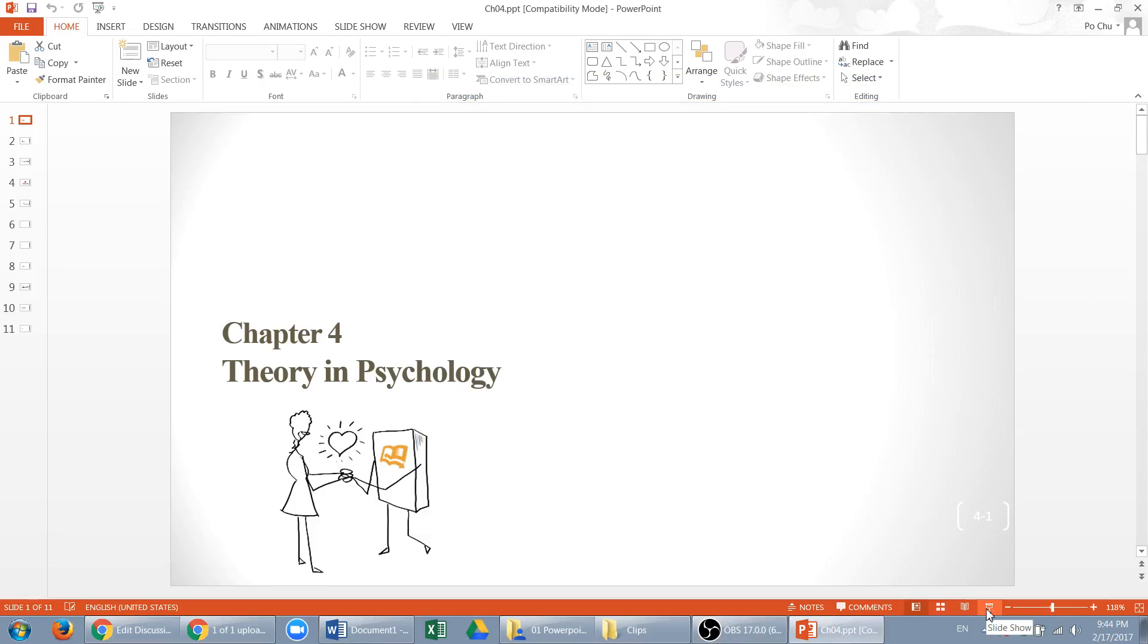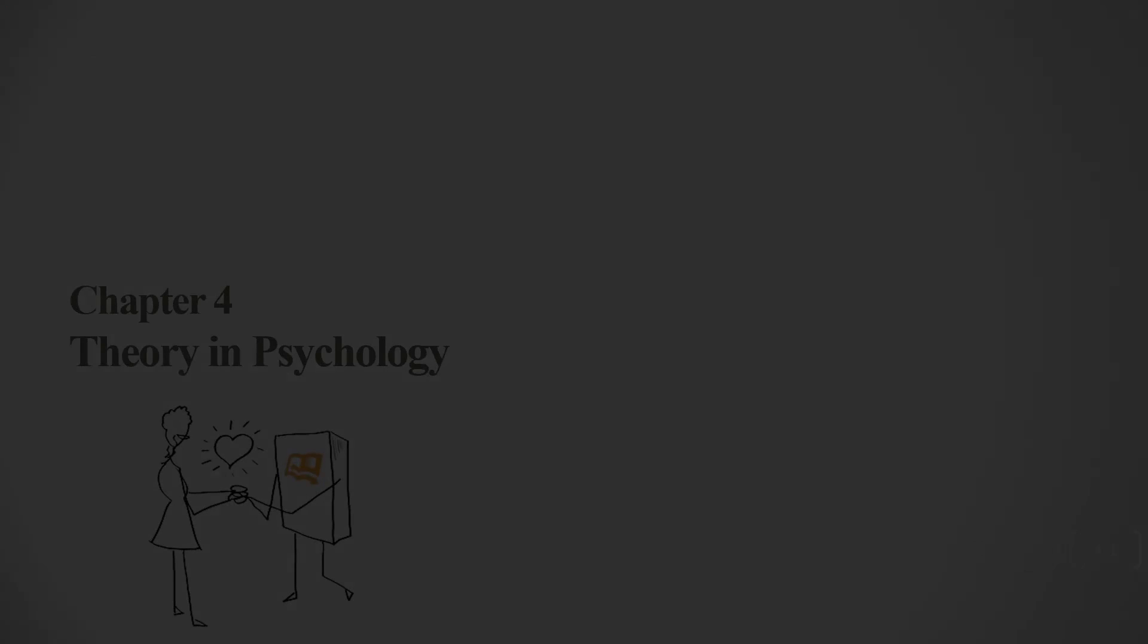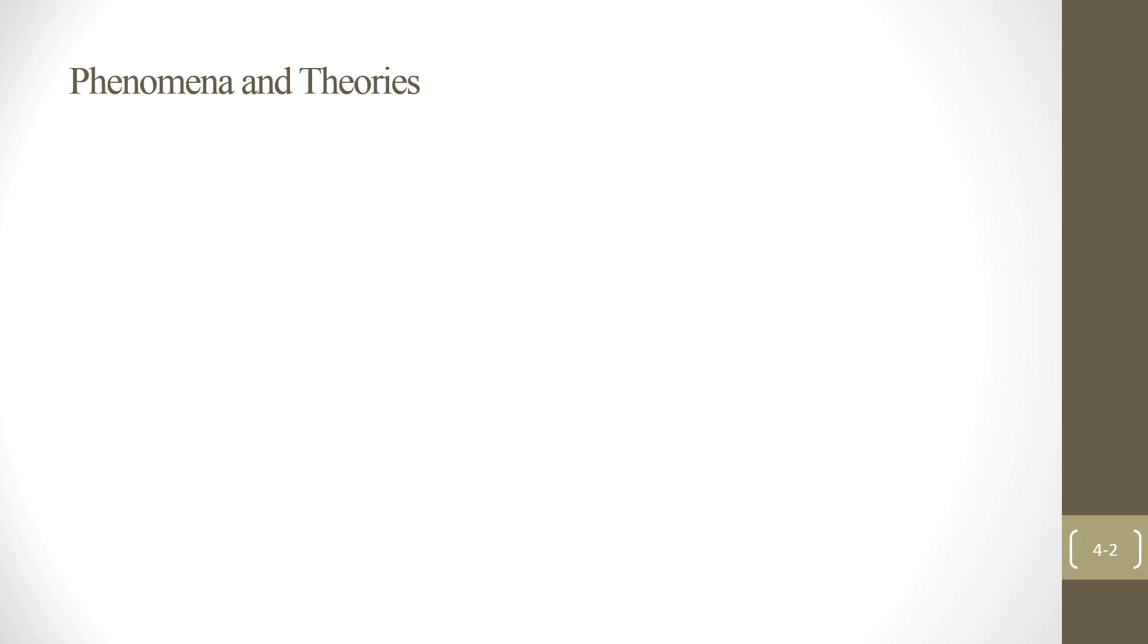Alright, now everyone, let's talk about Chapter 4, Theory in Psychology. Now the first term we want to discuss will be Phenomenon and Theories. So a phenomenon is a general result that has been observed, that is the key word, reliably in empirical research.